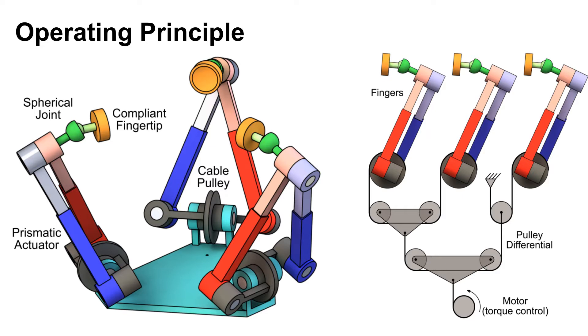To apply an inward torque to each of the fingers, a single revolute grasp actuator in the palm of the hand is coupled to the fingers with a pulley differential. This actuator is operated in torque control to avoid imposing redundant kinematic constraints on the mechanism.